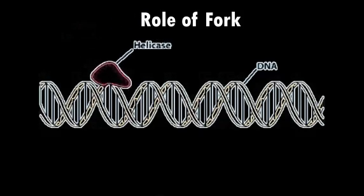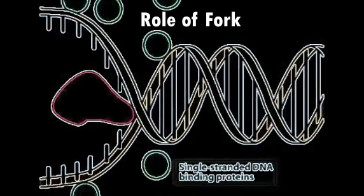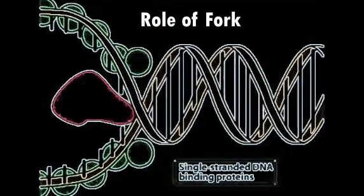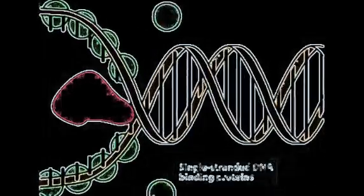When DNA replicates, the enzyme helicase separates the DNA strands. Single-stranded DNA binding proteins then stabilize the unwound template DNA, keeping it in an extended single-stranded state so that it can be copied by DNA polymerase.